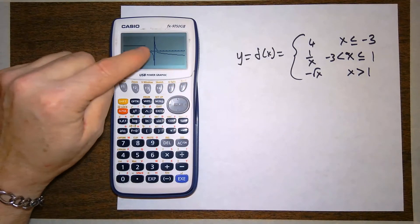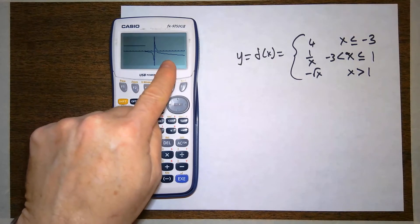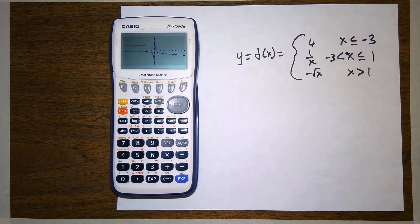So here's the line. Here is the reciprocal function. And there is the square root function reflected over the x-axis.